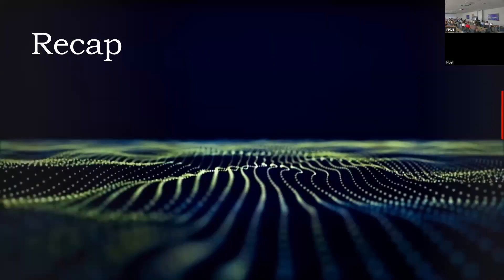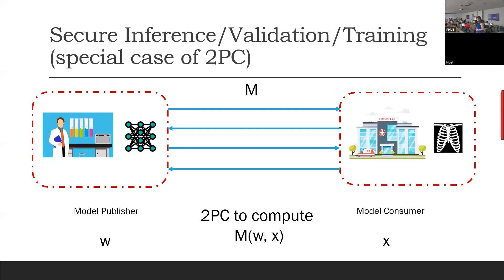A little bit of a recap from yesterday so that we can all be on the same page. We were looking at the problem of secure inference, validation, or training — all special cases of two-party secure computation. We had a model publisher on the left who wanted to protect the model weights, and a model consumer on the right who wanted to protect the input. The architecture was public and we wanted to run a 2PC to compute m of w, x and see how efficiently we can run it.